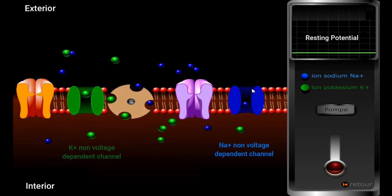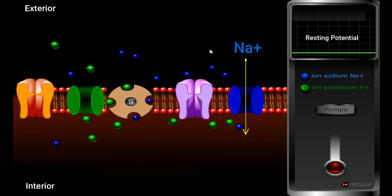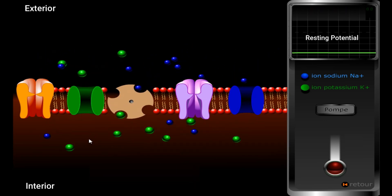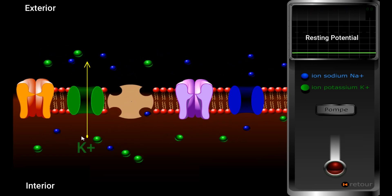Passive transport is ensured by the non-voltage dependent channels for Na+ and K+. As you see, Na+ ions diffuse through these channels from the medium of high concentration to the medium of low concentration, while K+ ions diffuse from inside to outside.